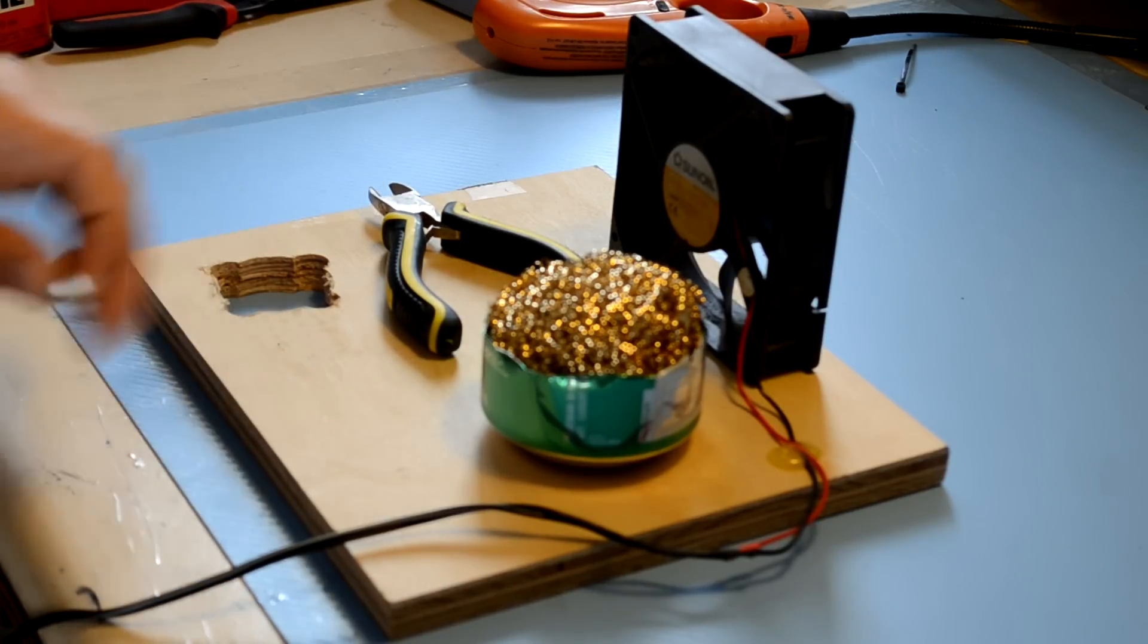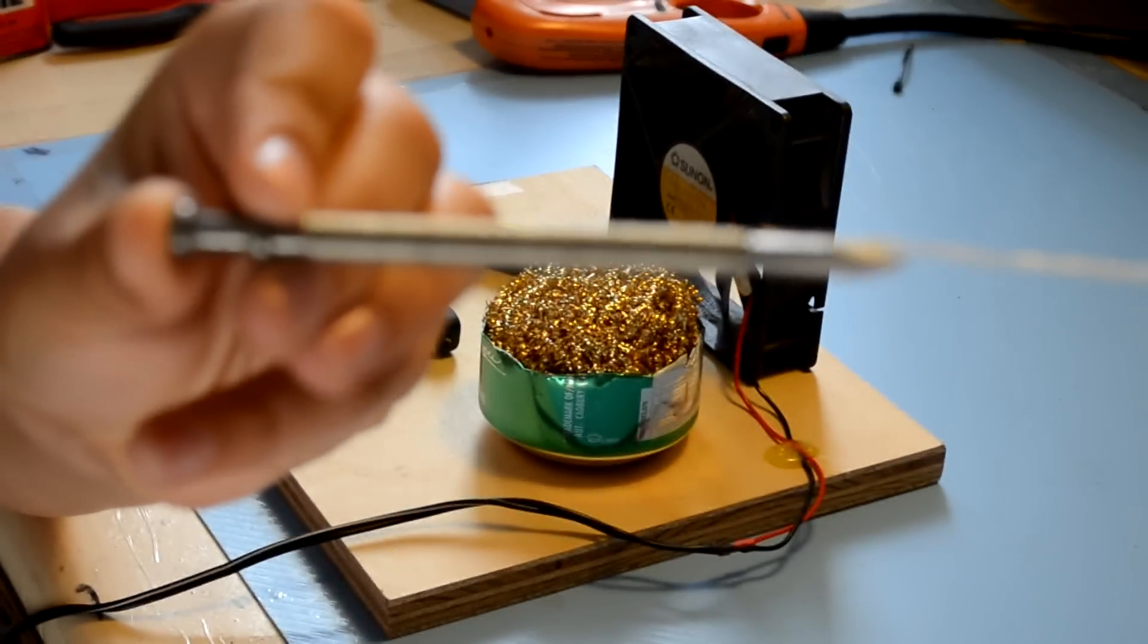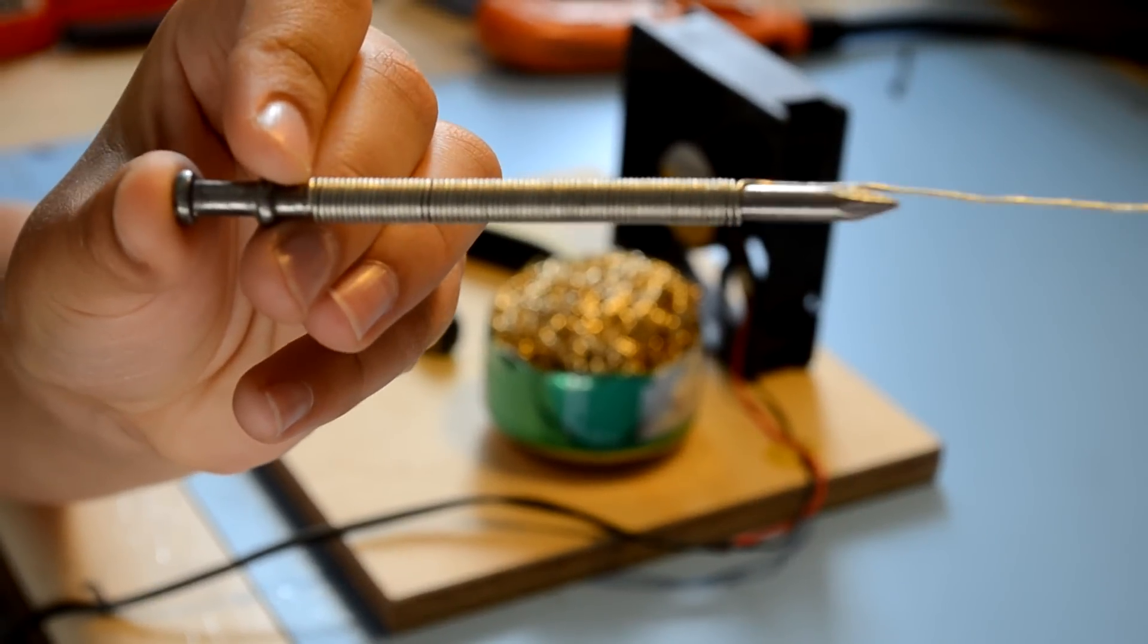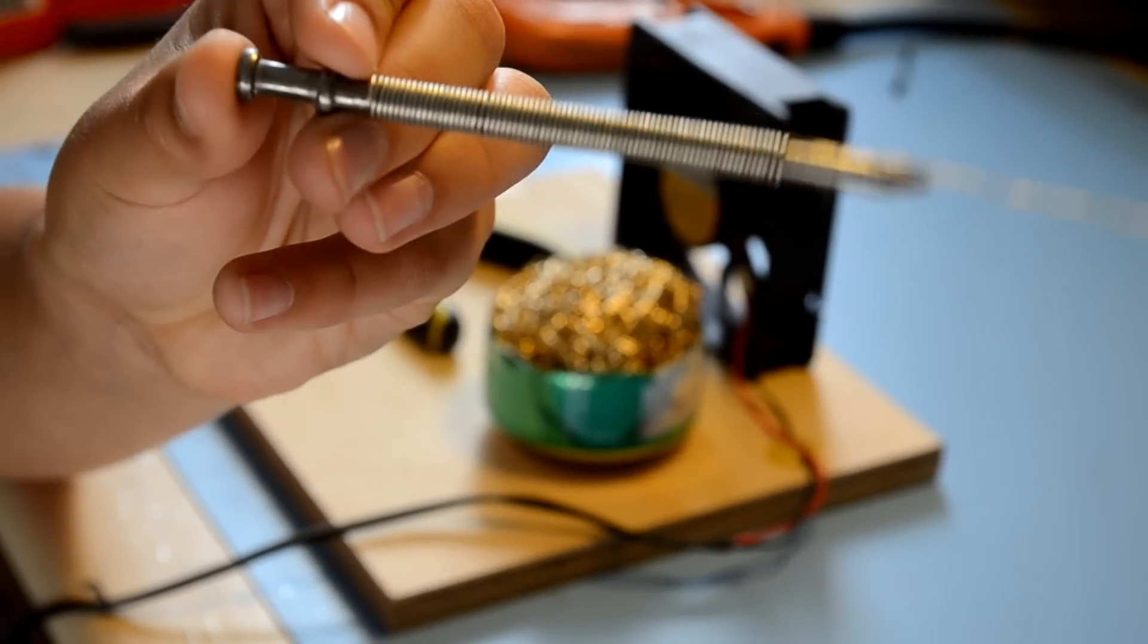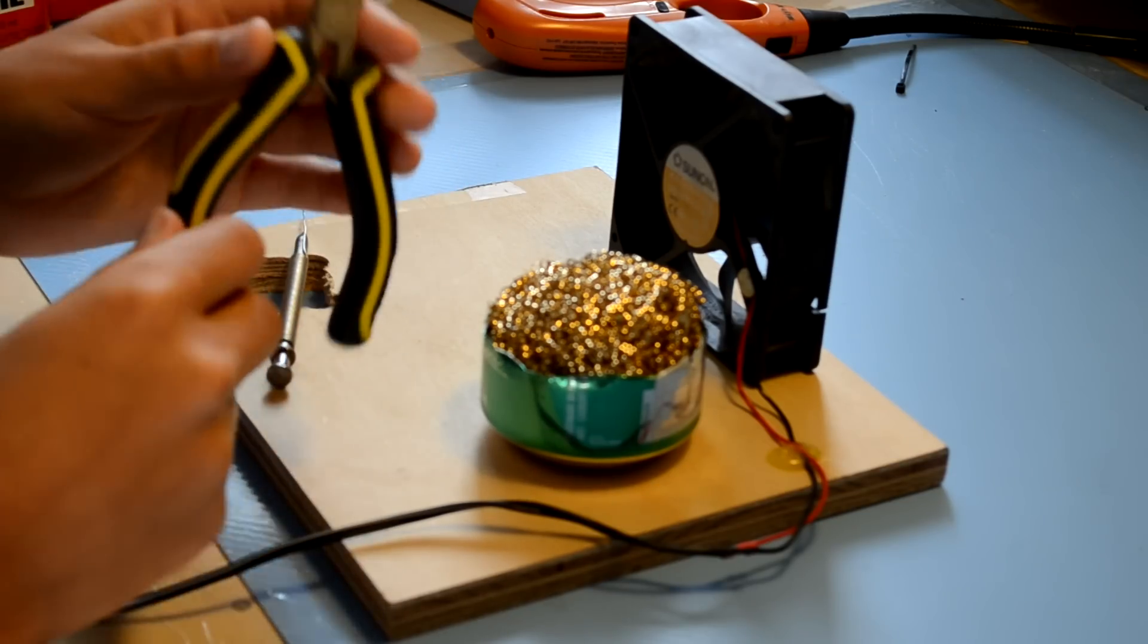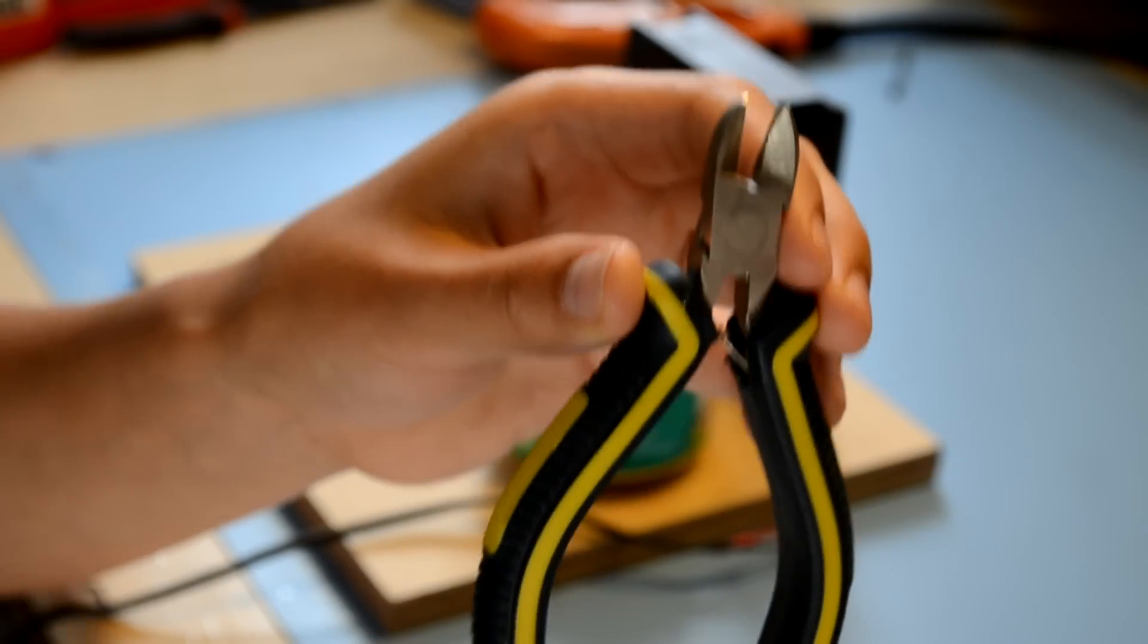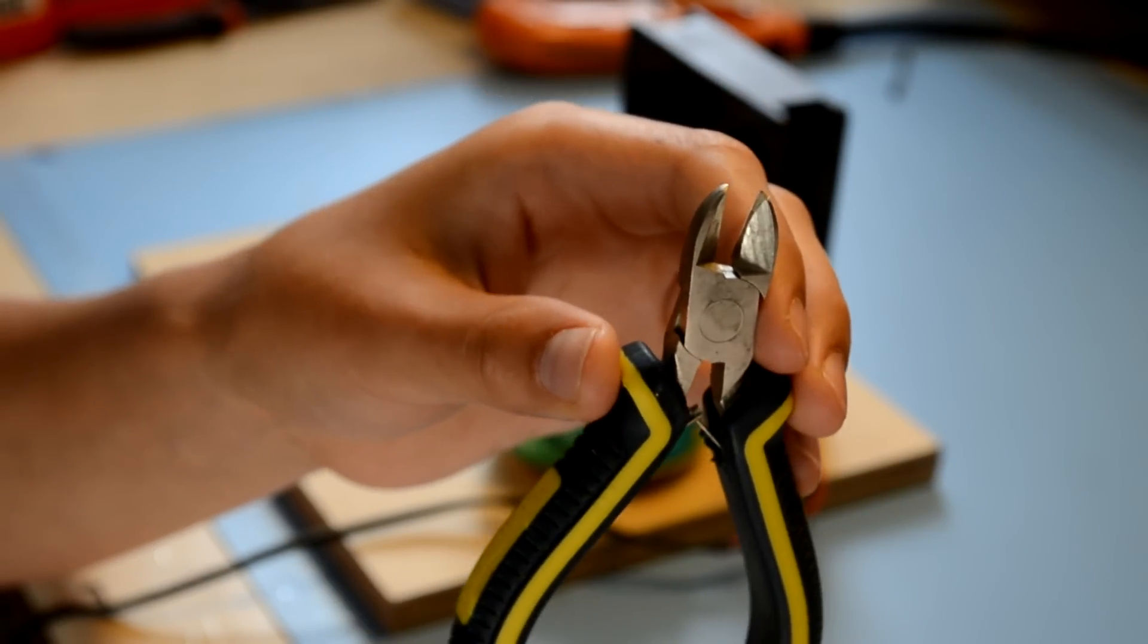The next thing that you're going to need is of course solder. I've got my solder wrapped around a nail like you see here. This just makes it easier to use. I'll be showing you how to do this in just a few moments. The next thing you need is a good pair of side cutters. These are used for snipping leads off of components once you've soldered them in place.